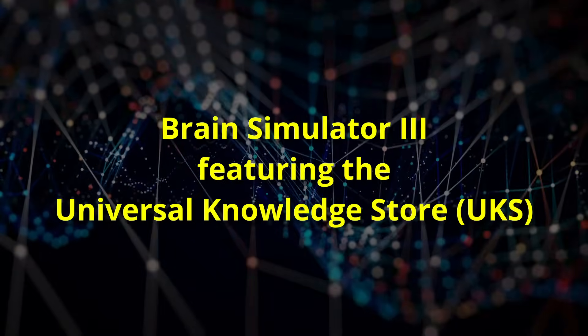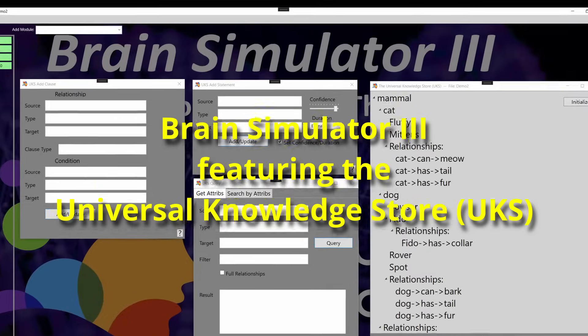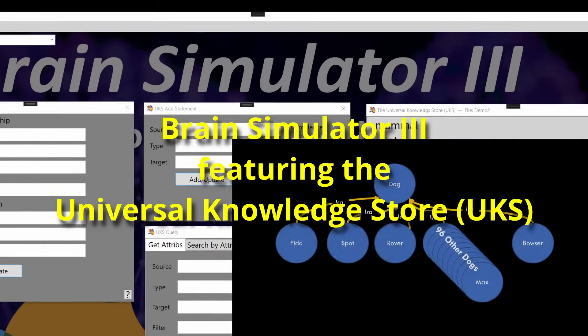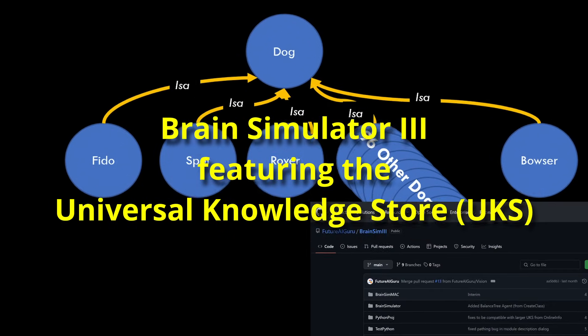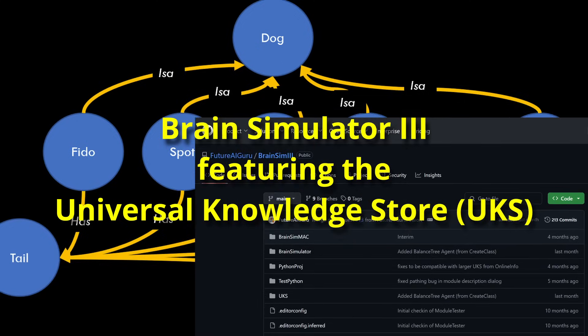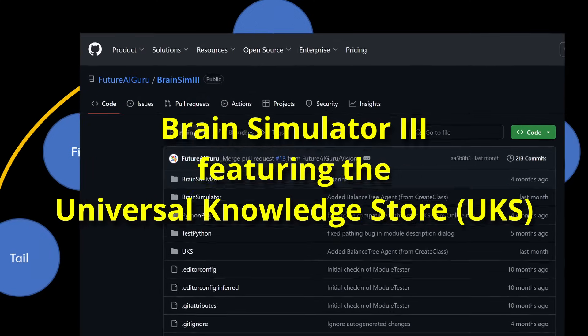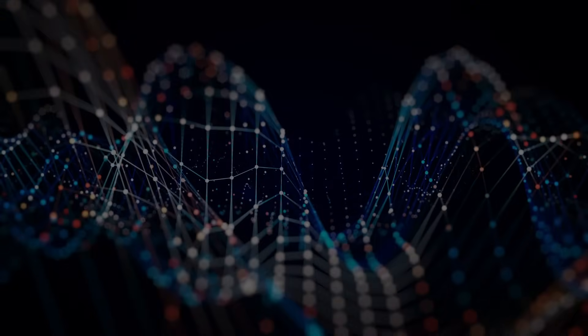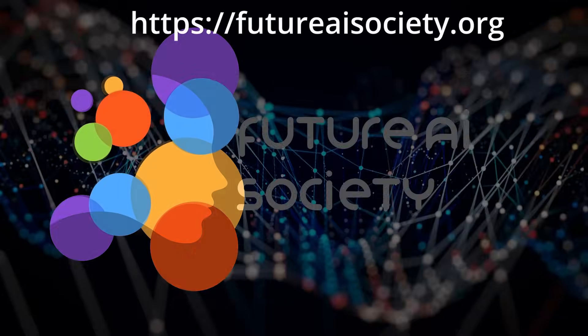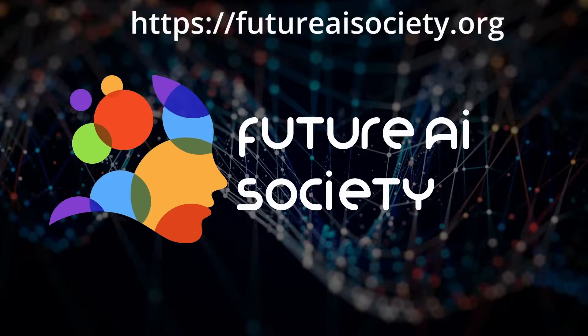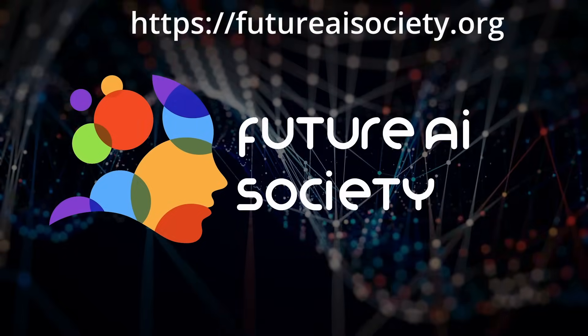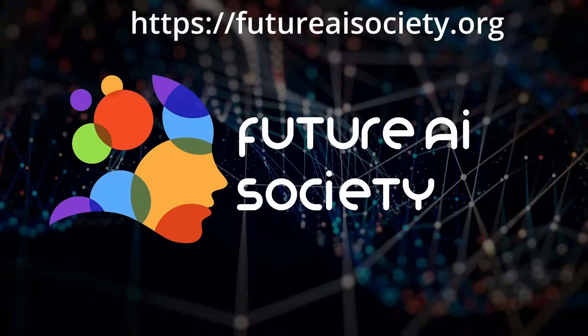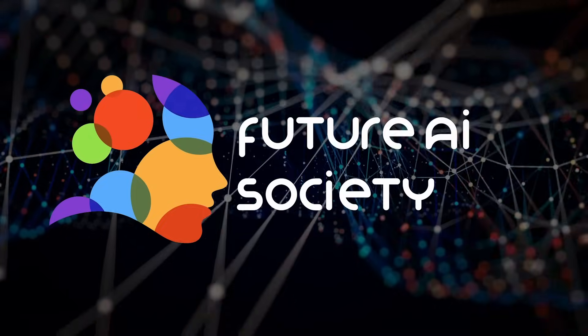Many of these capabilities are already implemented in our project, the Brain Simulator 3. If you're a software developer, you can download the project from GitHub at the link in the description. And you can also join the Future AI Society to learn more and participate in our monthly online meetings and enhance the development of the software which forms the basis for the future of artificial intelligence.